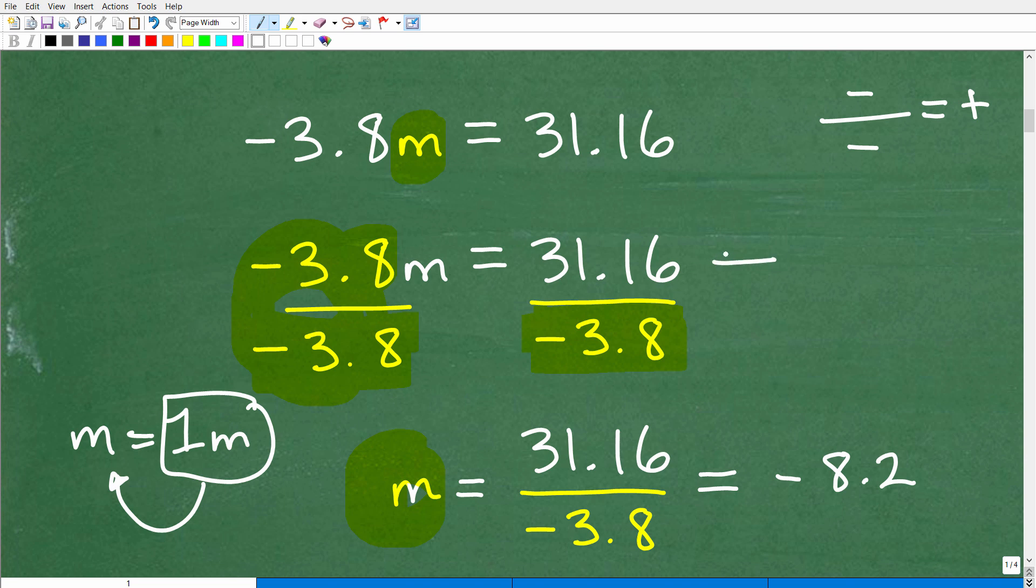But now, over here, we have a positive number being divided by a negative number. So, what's a positive divided by a negative? Hopefully, you said negative. So, if you plug this into your calculator, 31.16 divided by negative 3.8, your answer will be negative 8.2.